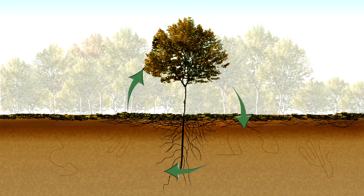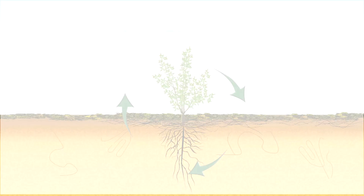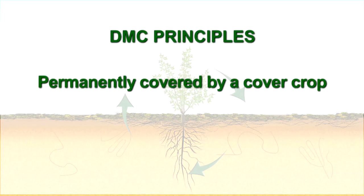DMC functions in the same way. It is based on three interlinked principles. The soil is permanently protected by a cover crop. The soil is never tilled, not even superficially.